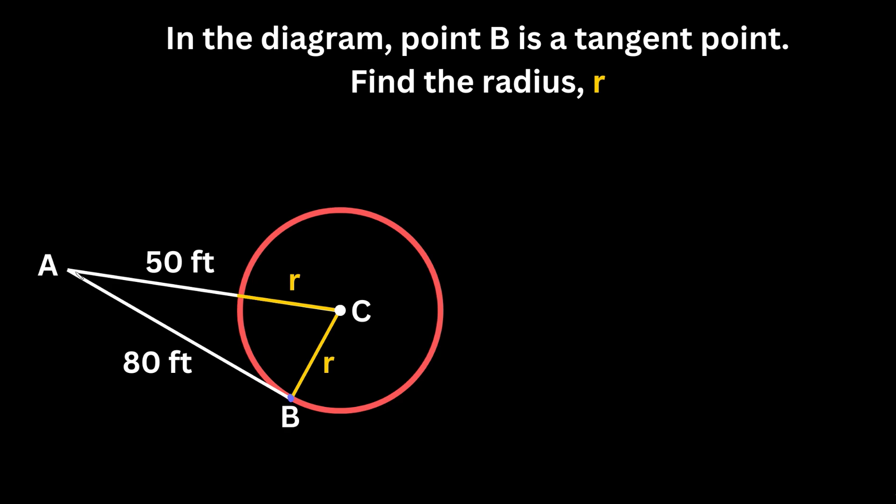So what does that mean? You have to remember that tangent lines always create 90-degree angles with the radius. If this is a tangent point, that just means this line and the radius form a right angle.